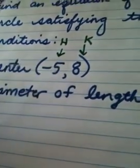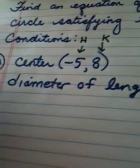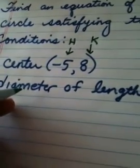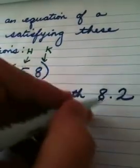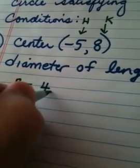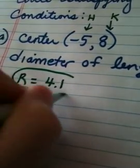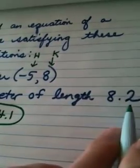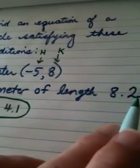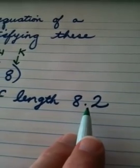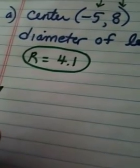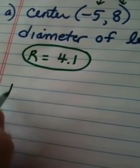So H in this problem is negative 5 and K is 8. That's always how you label the center H, K. Now when I'm trying to find an equation of a circle, I don't need diameter, I need the radius. Well if the diameter of the circle is 8.2, that means the radius is 4.1. The diameter of a circle is all the way across the circle through the center, the radius is halfway. So if someone gives you the diameter, you take half of that to get the radius.